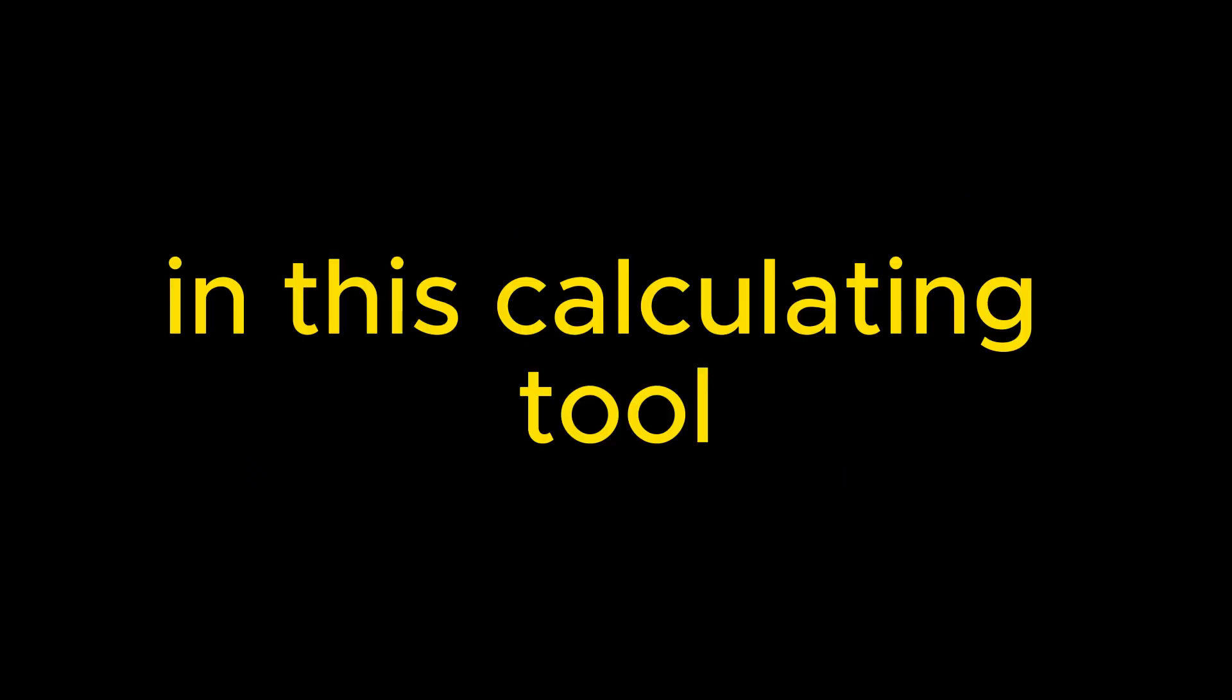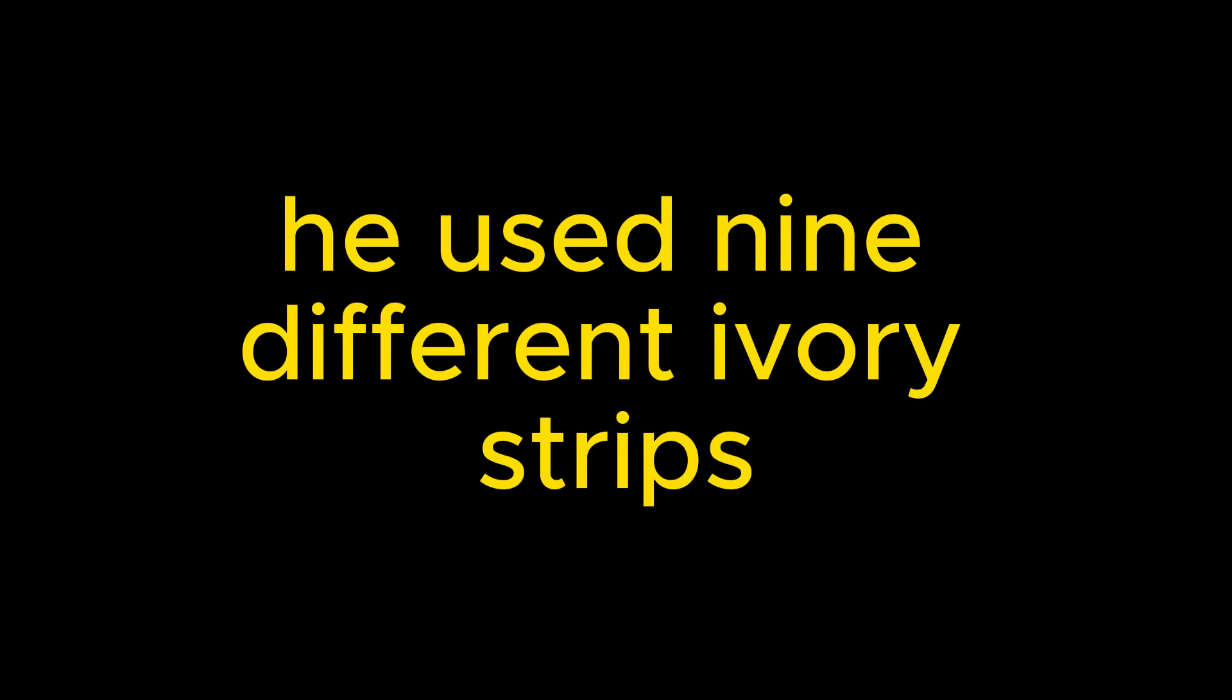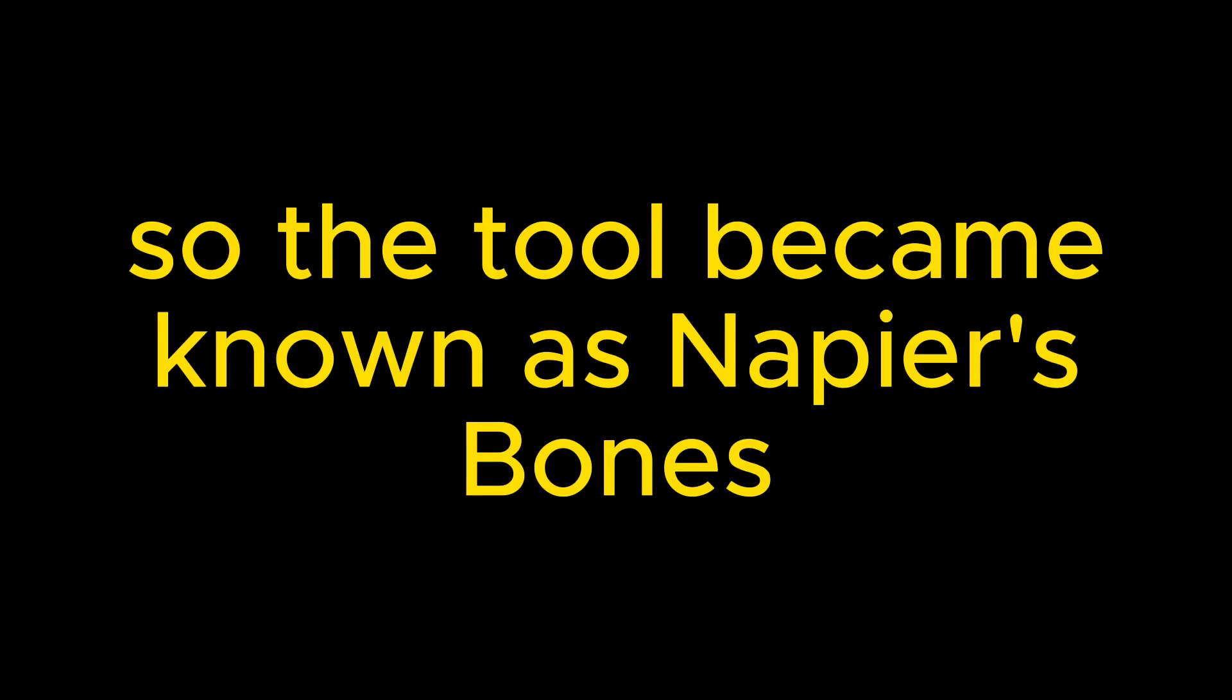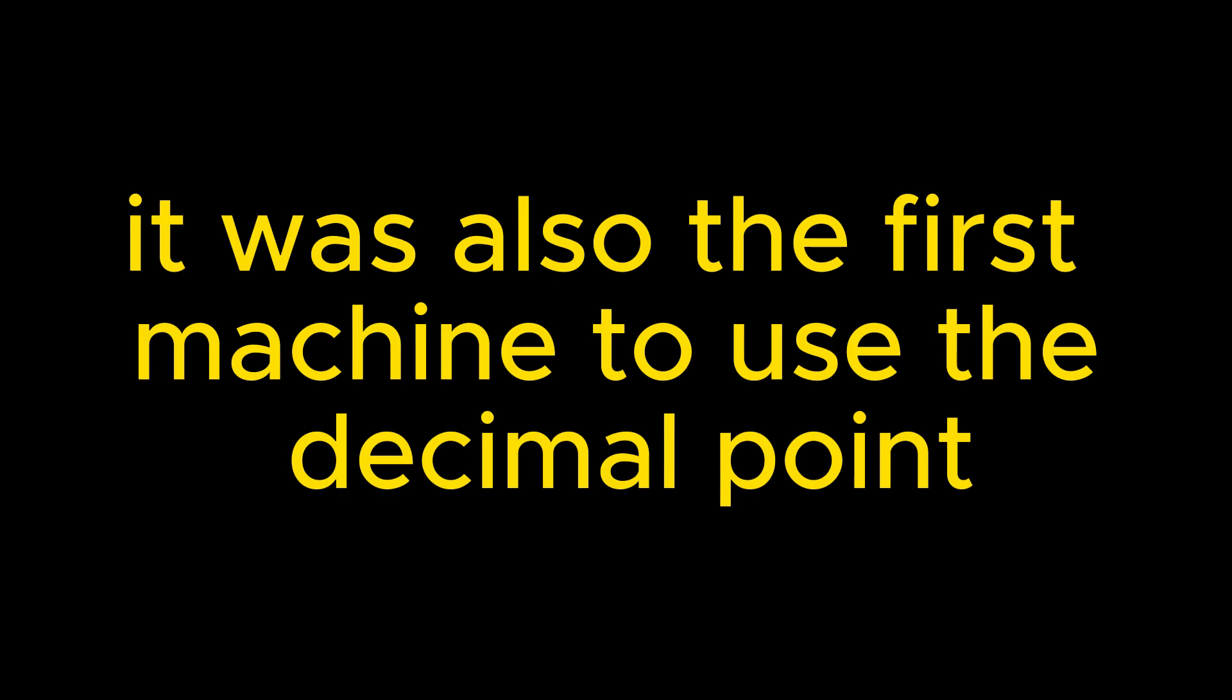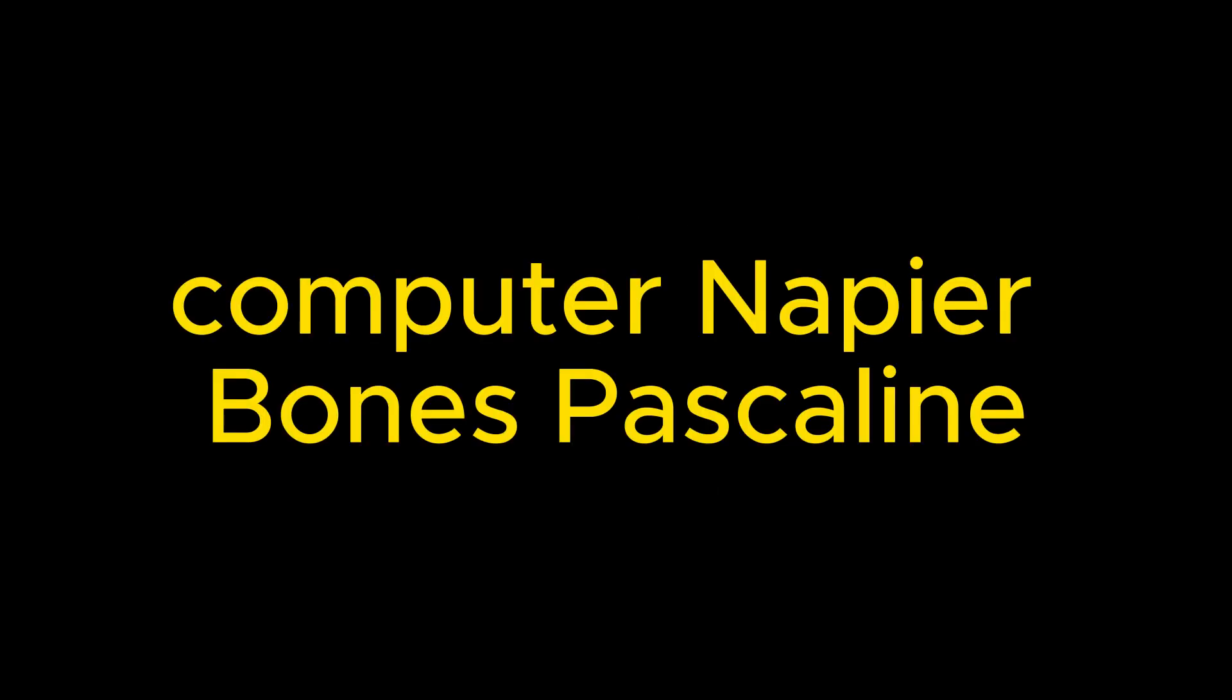In this calculating tool, he used nine different ivory strips or bones marked with numbers to multiply and divide. So the tool became known as Napier's Bones. It was also the first machine to use the decimal point.